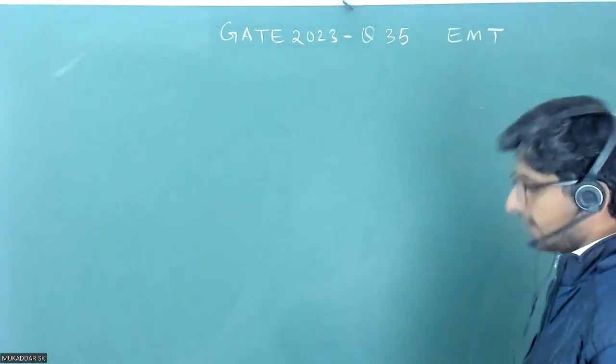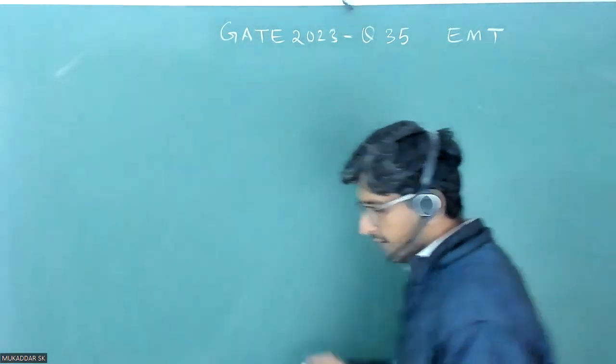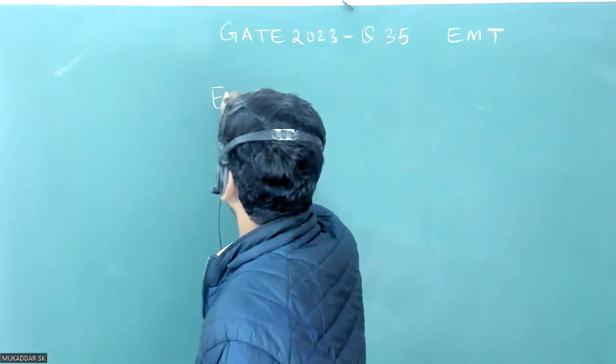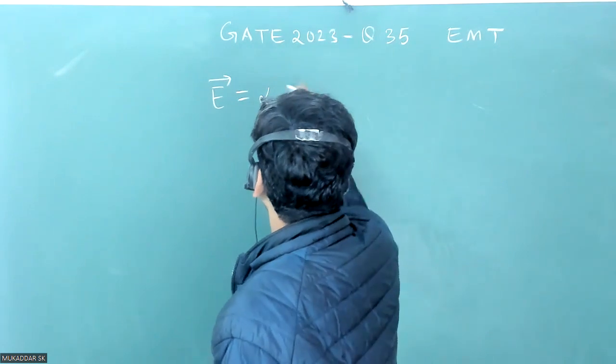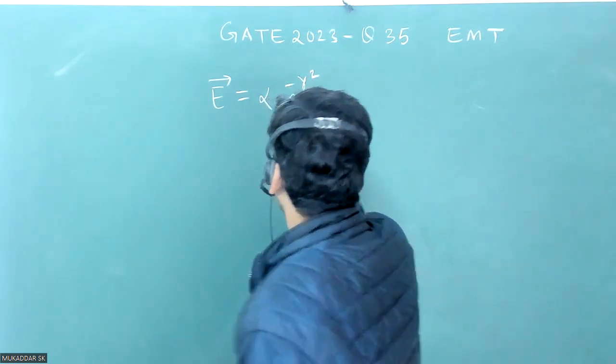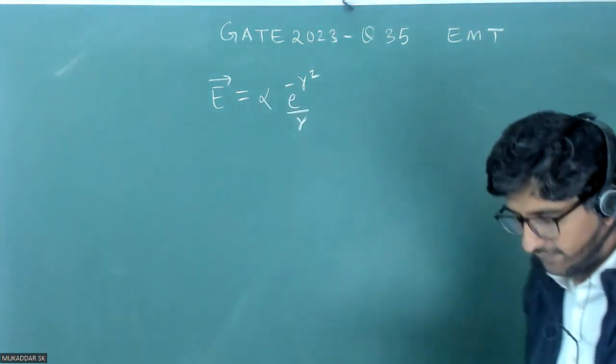In this question, question number 35 of EMT, electric field profile is given, E is equal to alpha e to the power minus R square by R. This is some non-uniform electric field that is given.